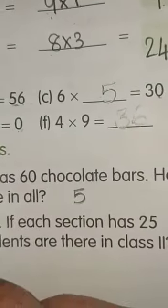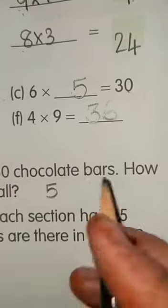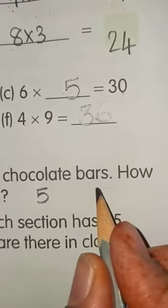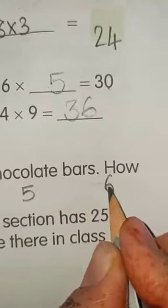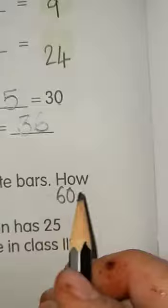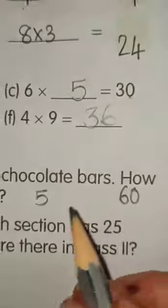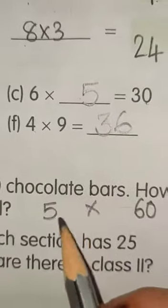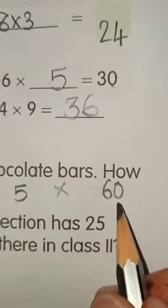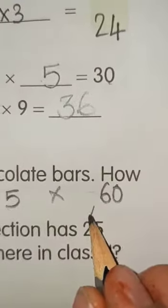Each box, each box has 60 chocolates. Each box has 60 chocolates. So, how many chocolate bars are there in all? That means, you have to multiply this 5 with 60. Let's do it now.